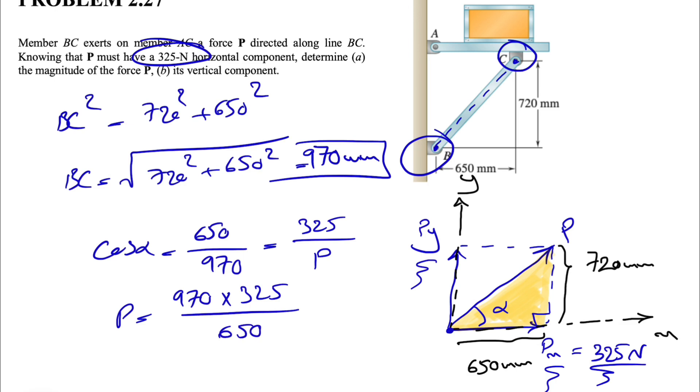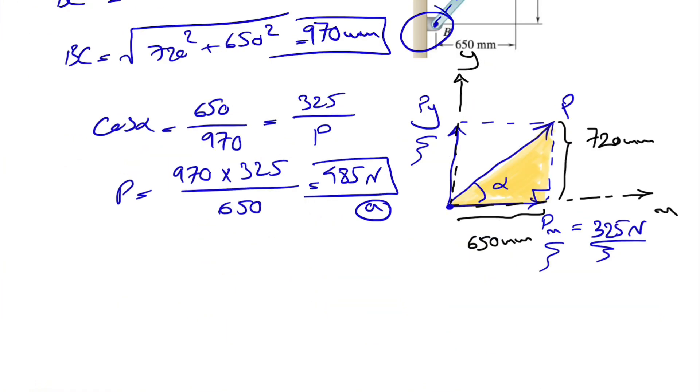This would give us 485 Newton, which is what the question is asking in part A. Basically, the ratio of the dimensions will be the same ratio of the forces that we have here, which are P_x, P_y, and P.